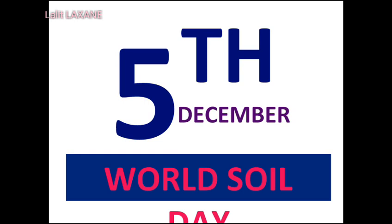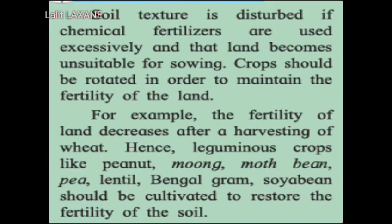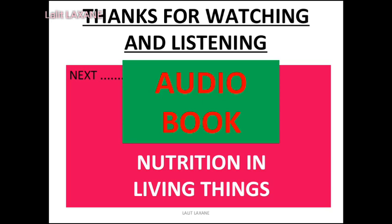To make efforts for conservation of soil, always remember: soil texture is disturbed if chemical fertilizers are used excessively, and that land becomes unsuitable for sowing. Crops should be rotated in order to maintain the fertility of the land. For example, after a harvest of wheat, leguminous crops like peanut, moong bean, pea, lentil, bengal gram, or soya bean should be cultivated to restore the fertility of the soil.